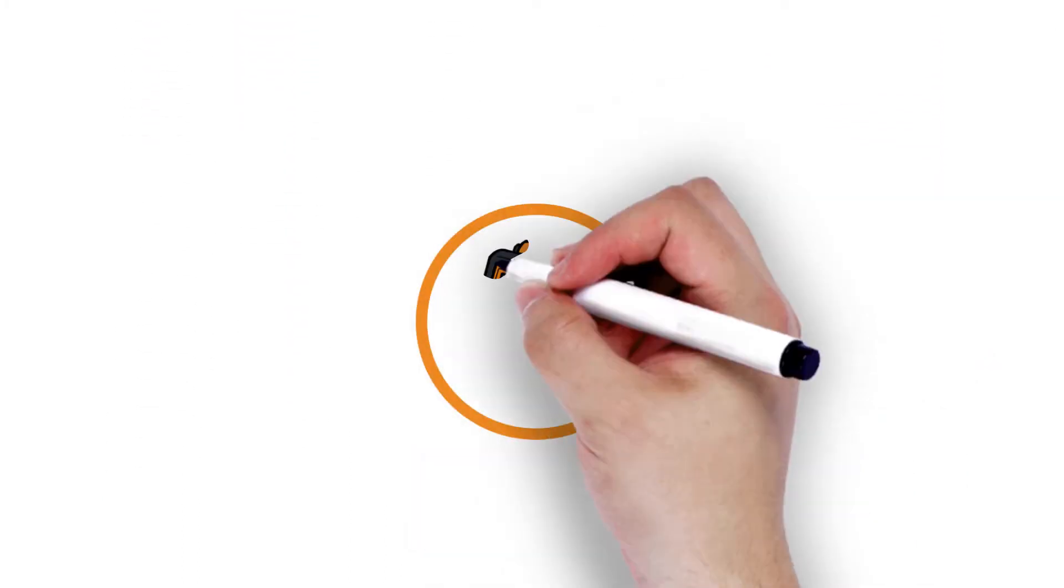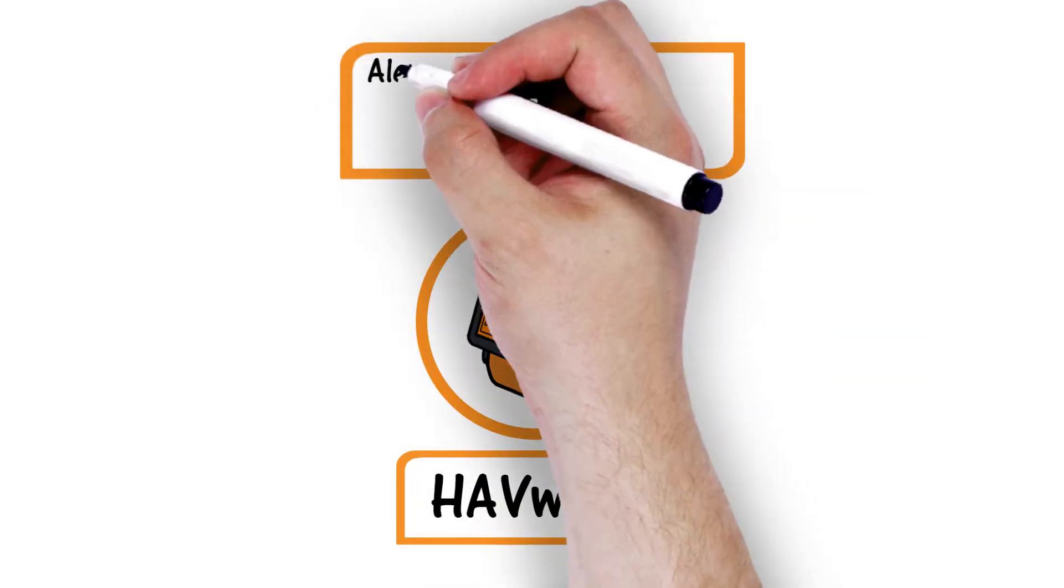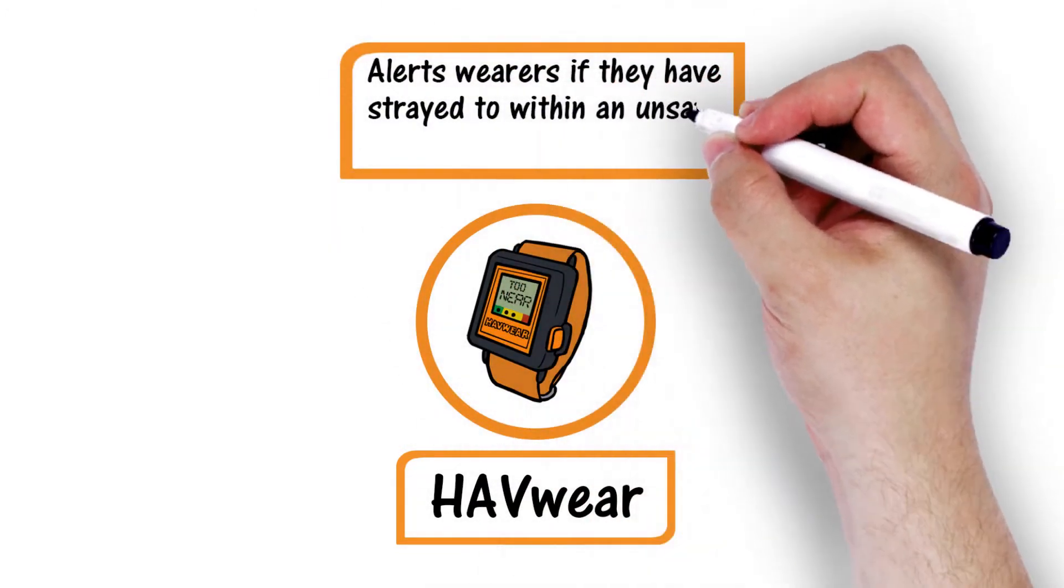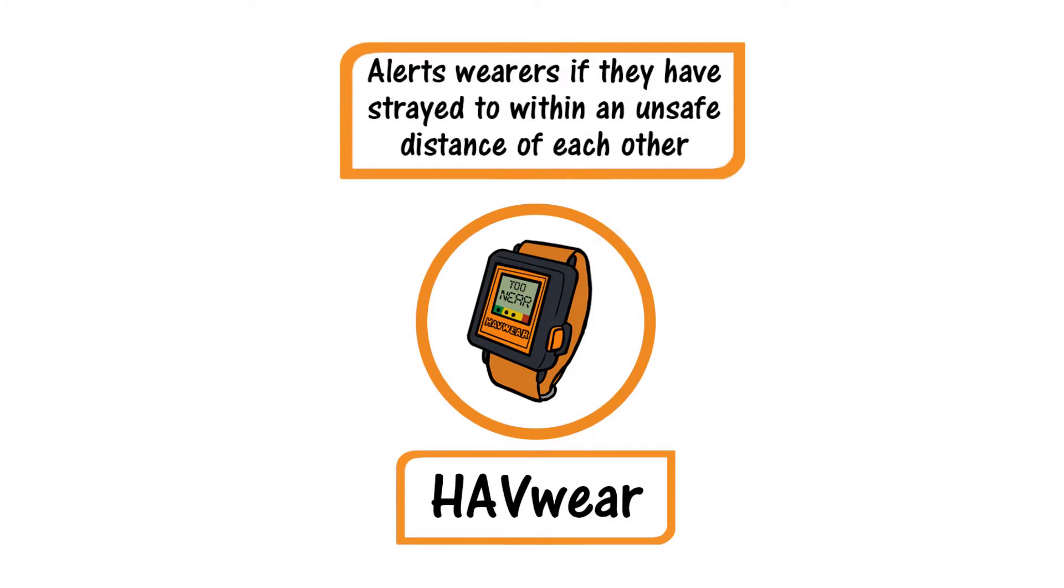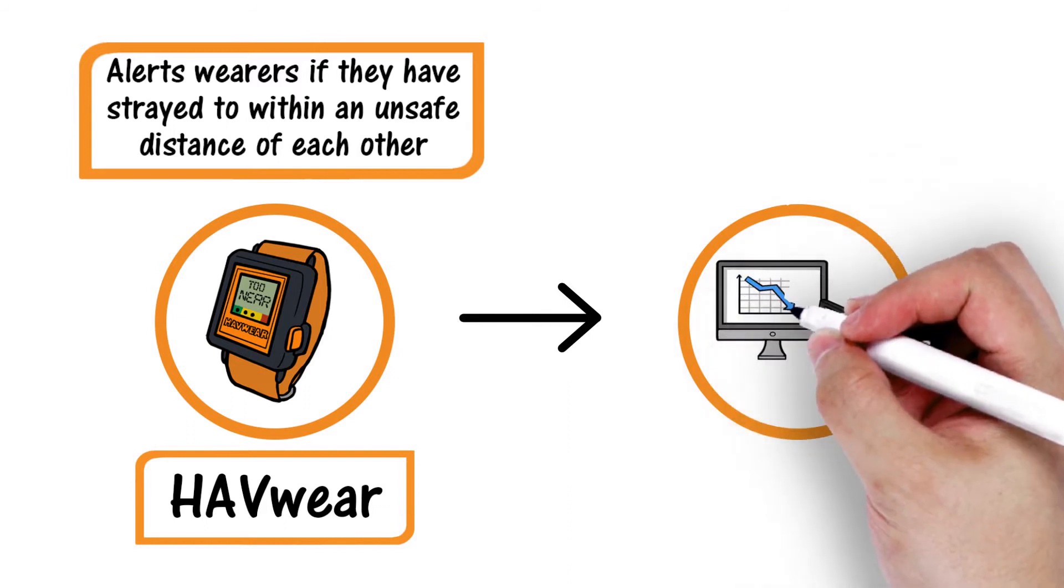This industrial-grade system uses watch-style devices to alert wearers in real time if they've strayed to within an unsafe distance of each other, while online reports inform employers of social distancing behavior and contact duration.